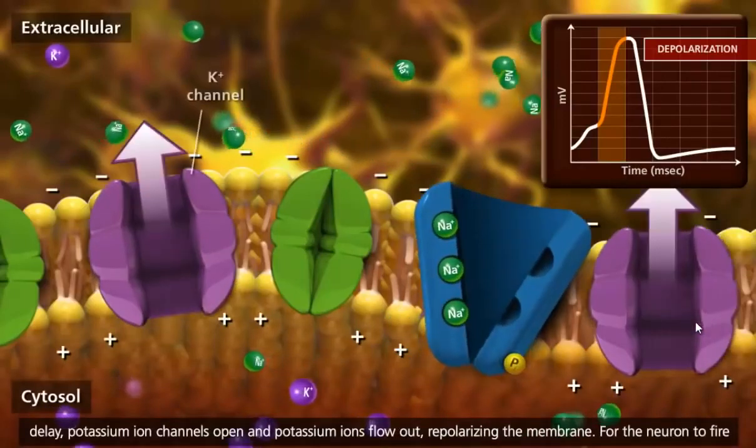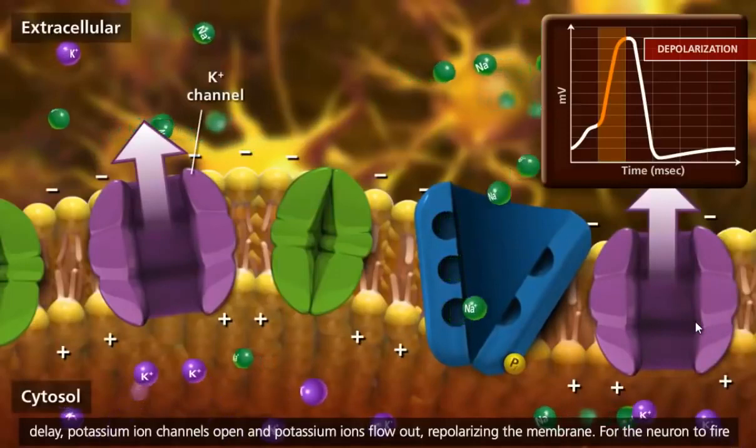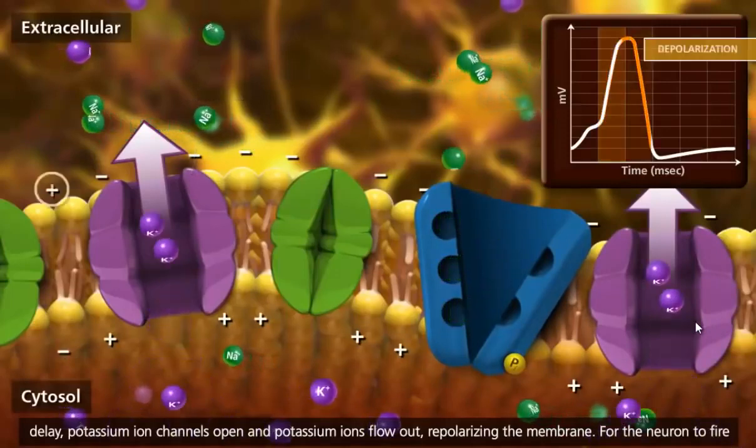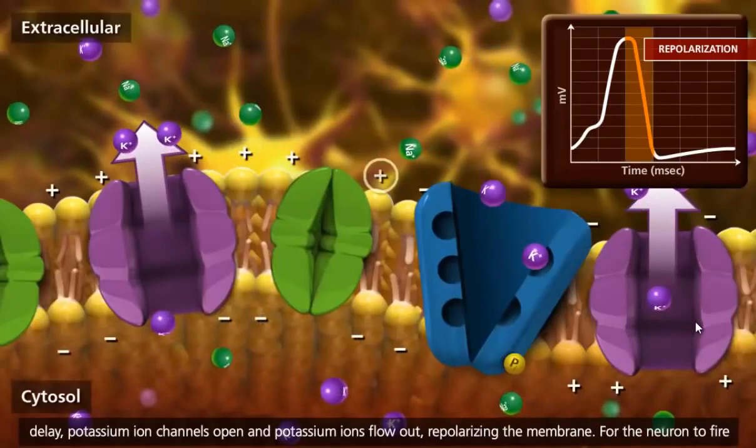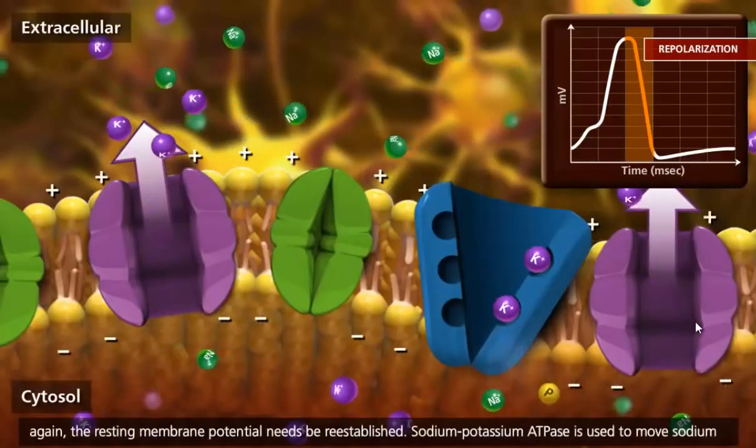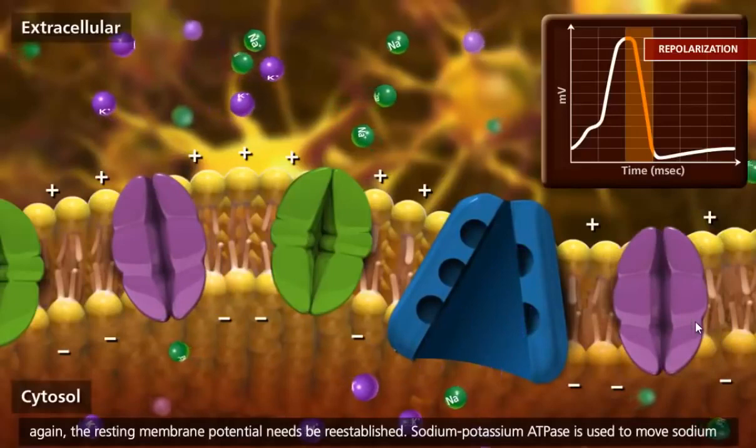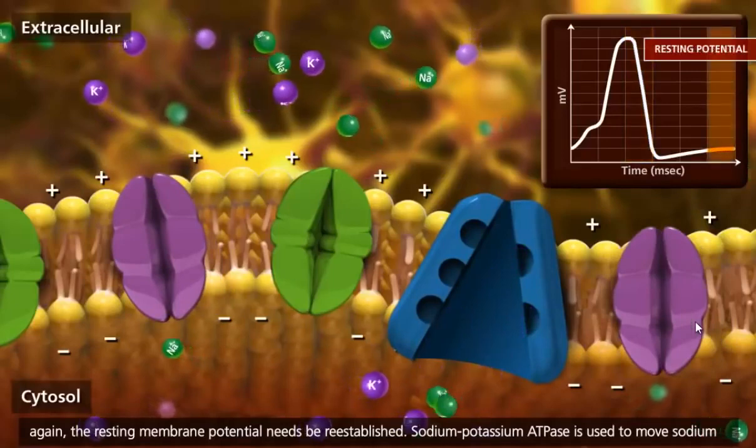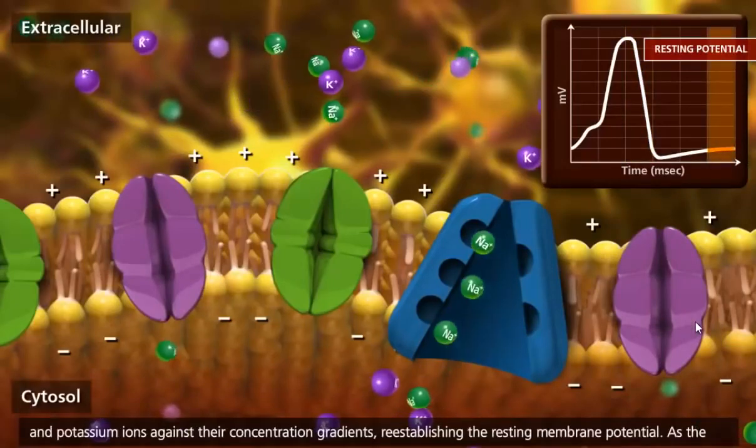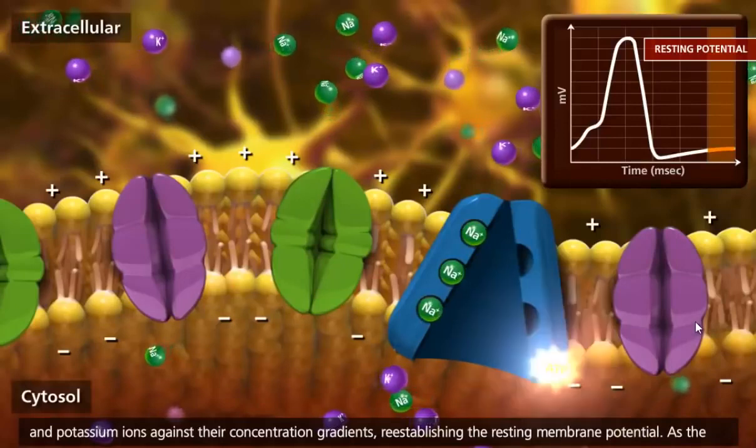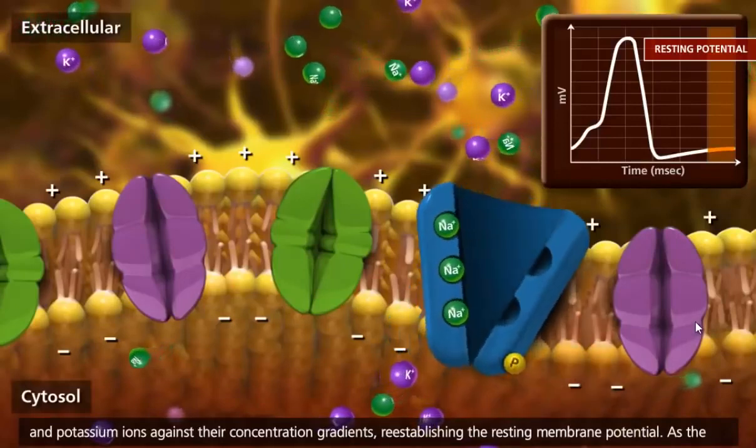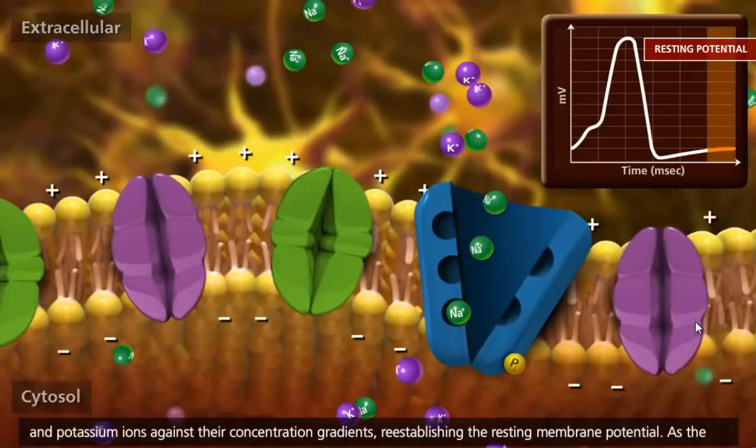After a short delay, potassium ion channels open and potassium ions flow out, repolarizing the membrane. For the neuron to fire again, the resting membrane potential needs to be re-established. Sodium-potassium ATPase is used to move sodium and potassium ions against their concentration gradients, re-establishing the resting membrane potential.